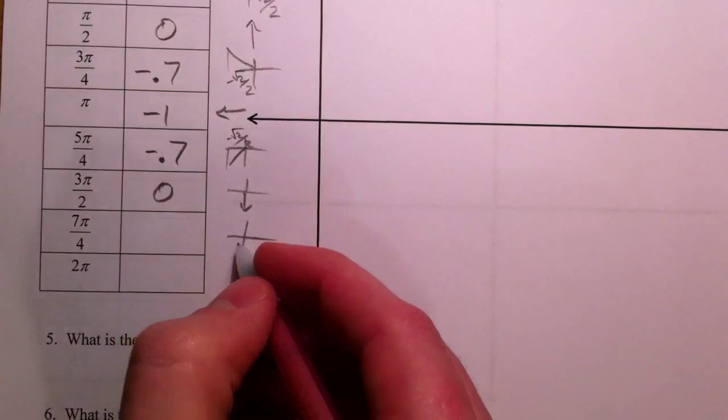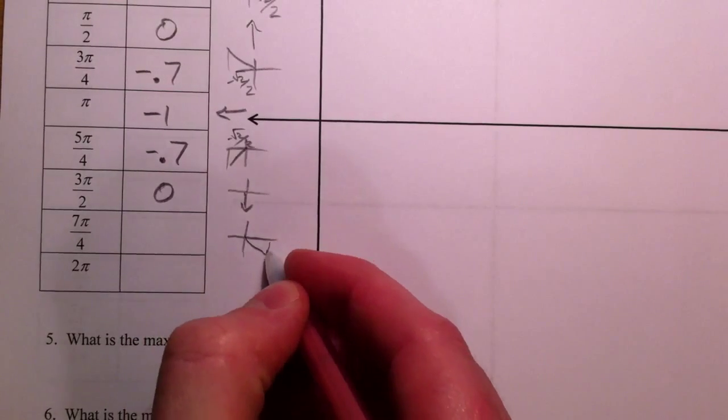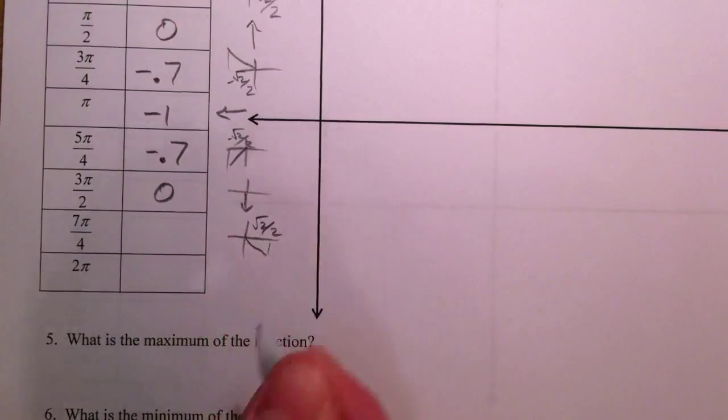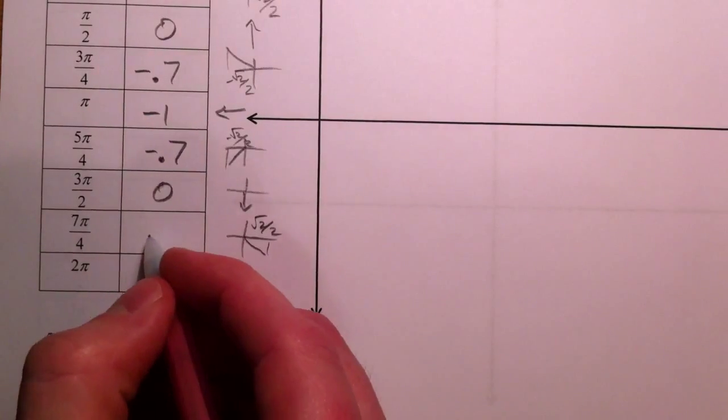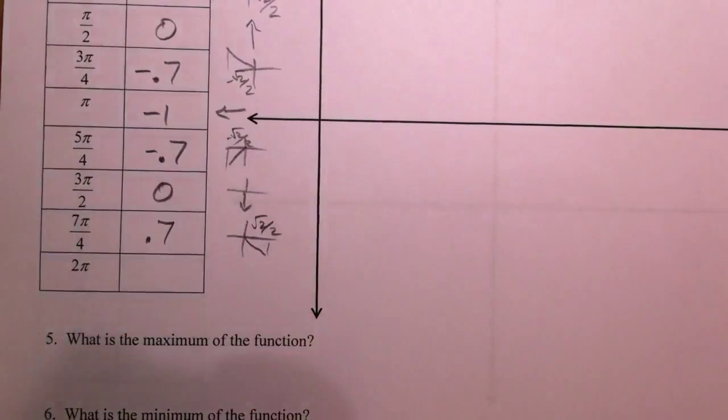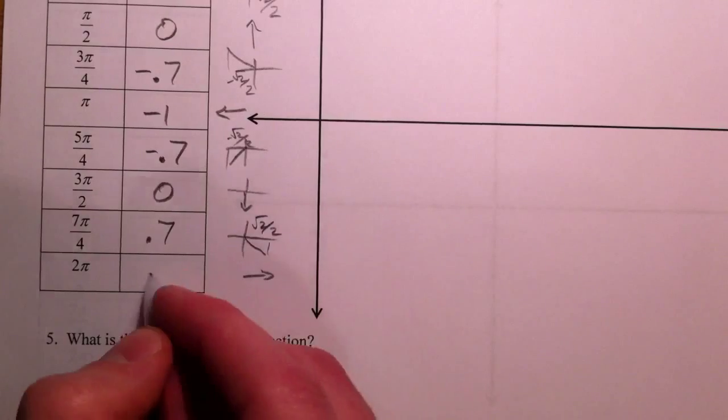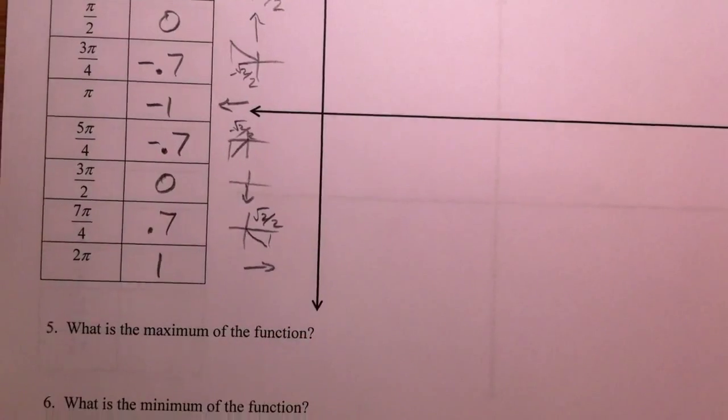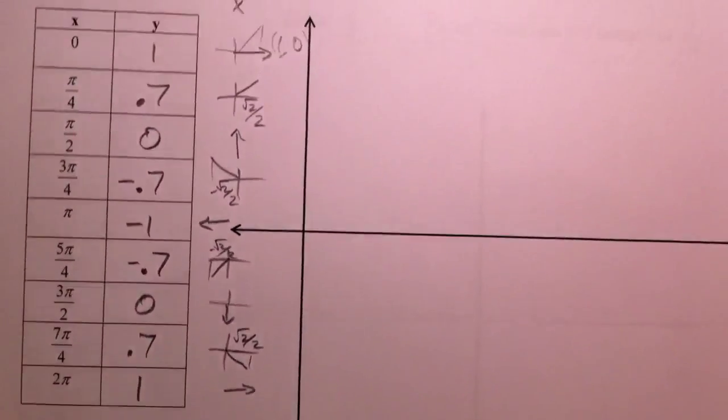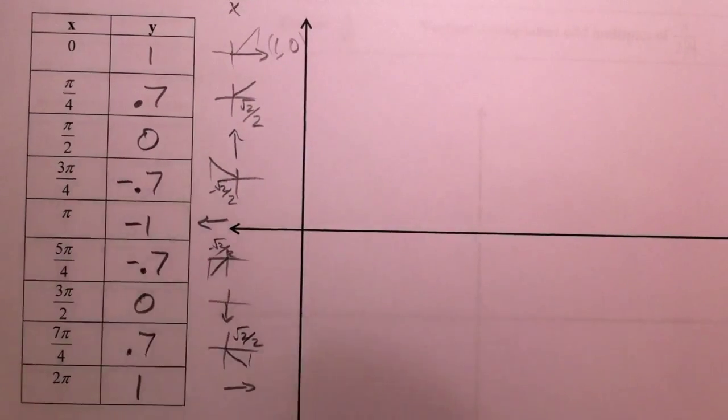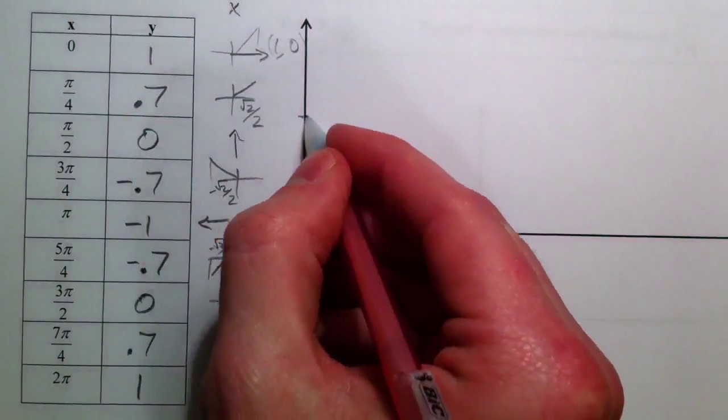7 pi over 4, off to the right, root 2 over 2, and you've got 0.7. And then straight to the right again, we're at 1. So all the same numbers that we had from the sine graph, but in a different order. We started at 1.